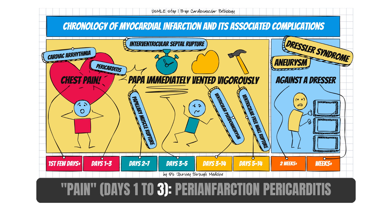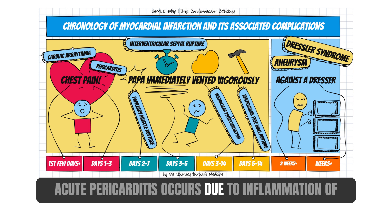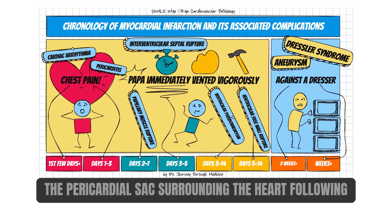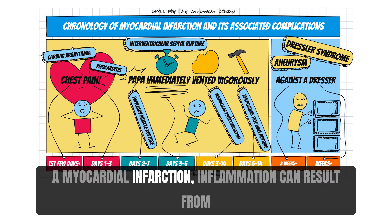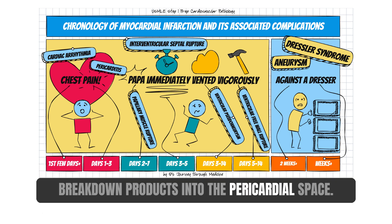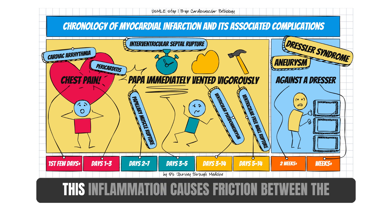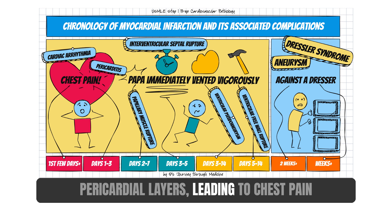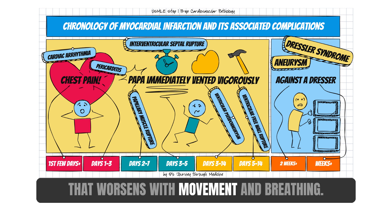Pain — days 1 to 3 — peri-infarction pericarditis. Acute pericarditis occurs due to inflammation of the pericardial sac surrounding the heart. Following a myocardial infarction, inflammation can result from the release of inflammatory cytokines and cellular breakdown products into the pericardial space. This inflammation causes friction between the pericardial layers, leading to chest pain that worsens with movement and breathing.